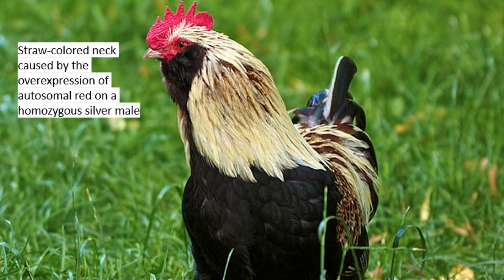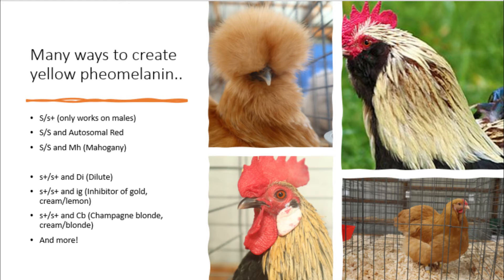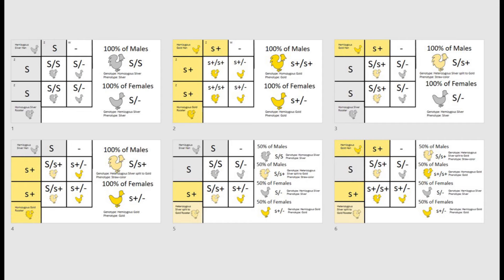However, keep in mind that other genes and a lot of selective breeding could be used to create colors similar to this too. The mahogany gene on a silver base bird could turn the white red, and the dilute, lemon, or champagne blonde gene on a gold base bird could also dilute the red to a straw color. Selective breeding is key in finding the exact shade you want. With all of that out of the way, let's move on to the Punnett squares.